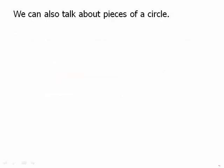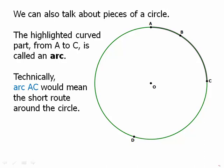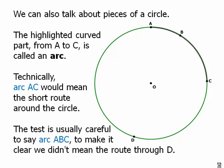We can also talk about pieces of a circle. The highlighted curve from A to C is called an arc. That is a piece of all the way around the circle. Technically, if we said arc AC, that would mean the short route around the circle. But the test is usually very careful to say arc ABC to specify a three-letter name for the arc, and that way it makes it clear that we didn't go the other way through point D.